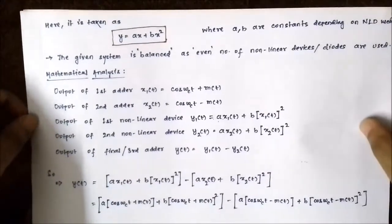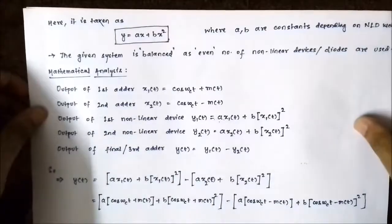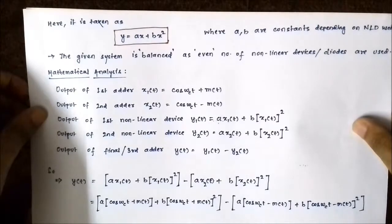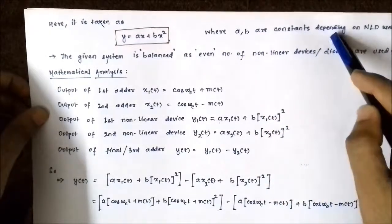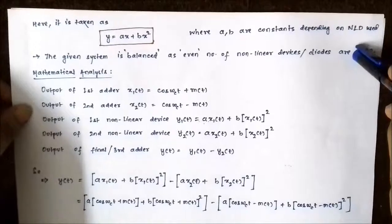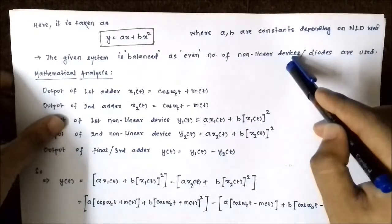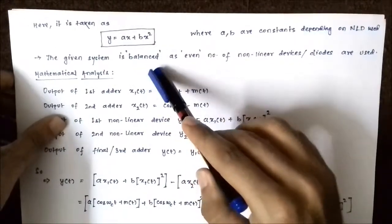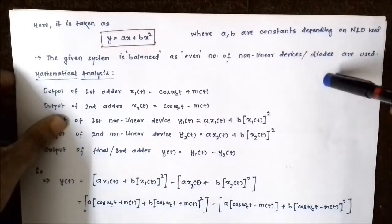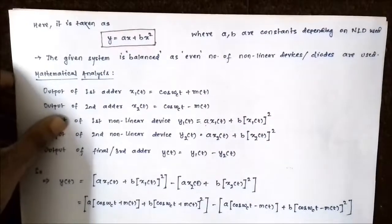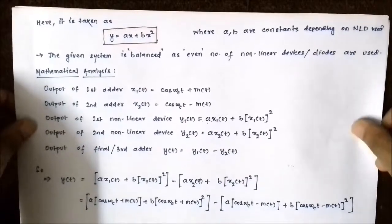As stated, we have approximated the input-output relationship of the diode as y = ax + bx², ignoring the remaining higher-order terms. a and b are constants depending on the type of nonlinear device used. Since an even number of nonlinear devices are used, it operates in balanced mode. If an odd number were used, it would be unbalanced. Please refer to the block diagram you have drawn.